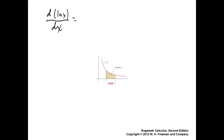Derivative of x would be 1. Derivative of log x? Derivative of a constant is 0. Any constant derivative would be 0. Derivative of a log function — the natural log — is 1 over x. Got it? Remember?